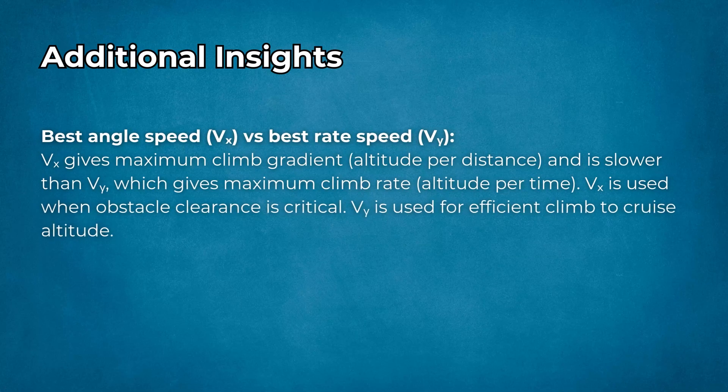Additional insights: best angle speed VX and best rate speed VY. VX gives maximum climb gradient — altitude per distance — and is slower than VY, which gives maximum climb rate — altitude per time. VX is used when obstacle clearance is critical, while VY is used for efficient climb to cruise altitude.